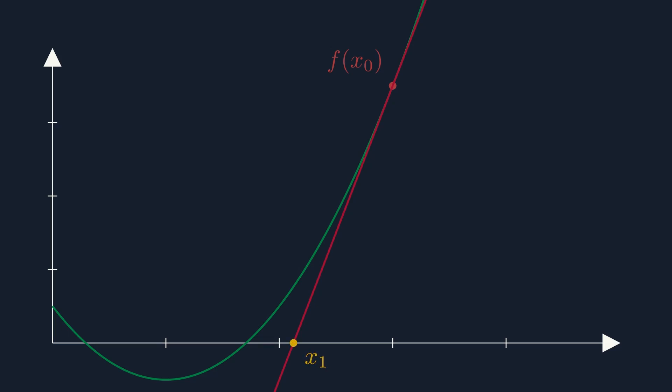The tangent can be described by the following equation using the derivative, meaning the rate of change of the function at that point. Now this is nothing but a linear function, for which, if you remember, we already discussed finding the root earlier. This new x-value is now closer to the root, and if we then take the function value at the new x-value, we can repeat the procedure and eventually get pretty much infinitely close to our root.